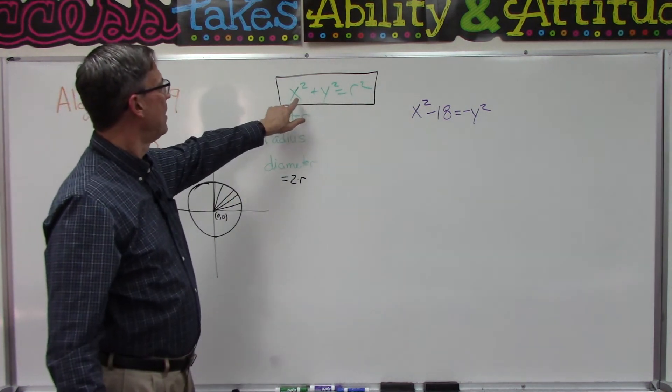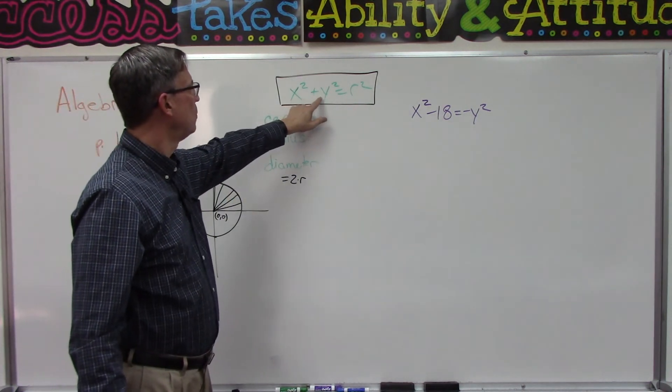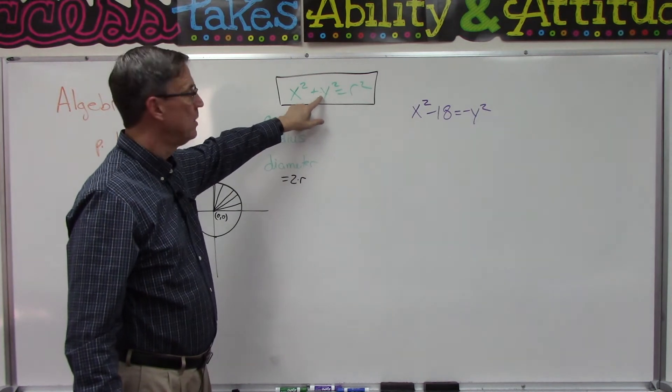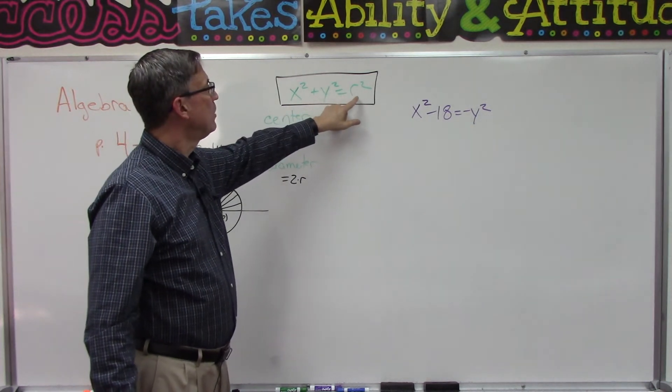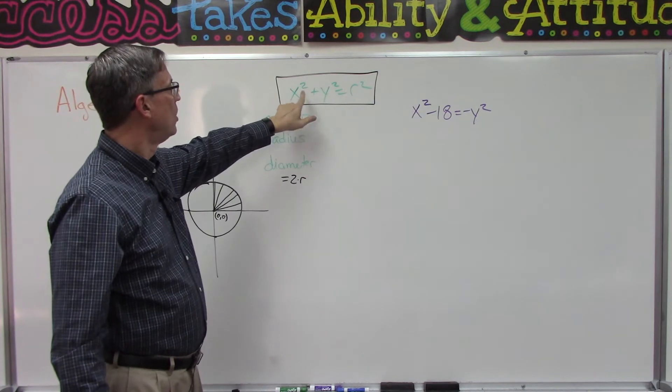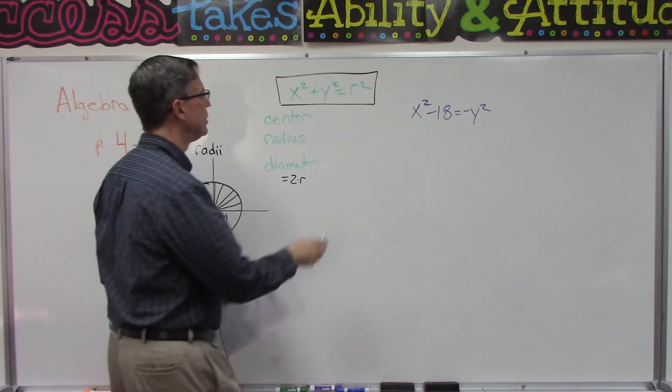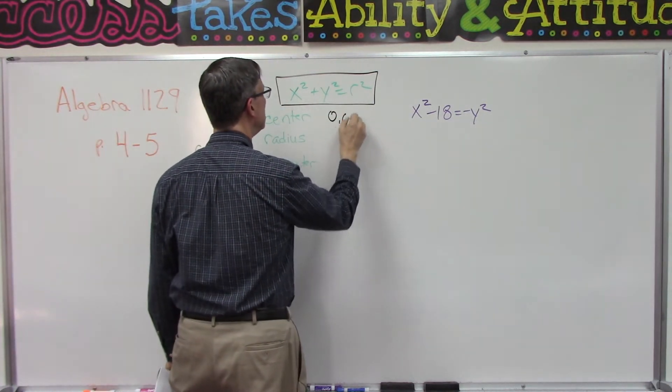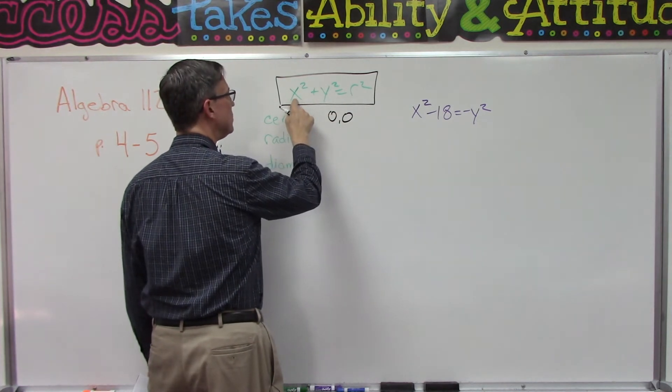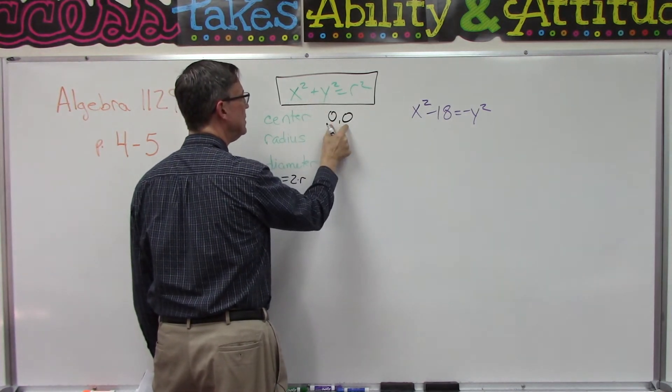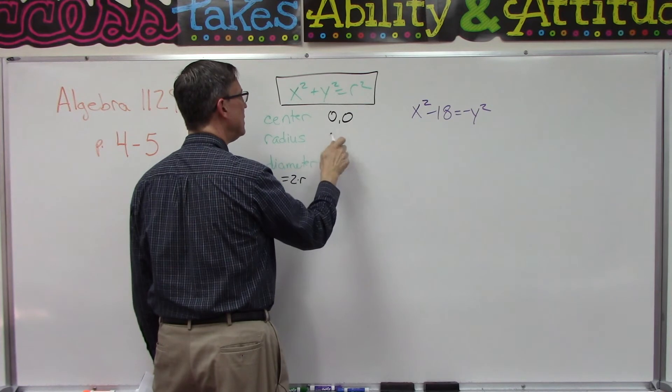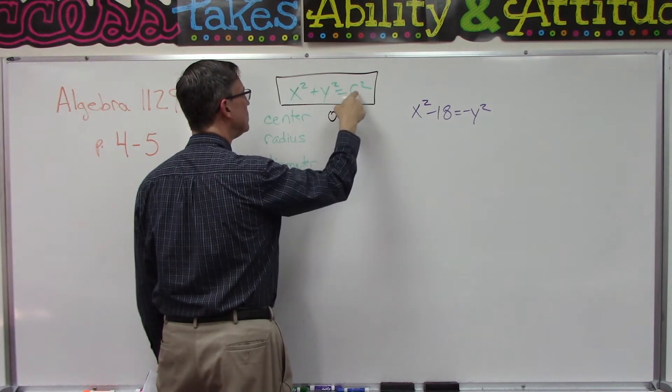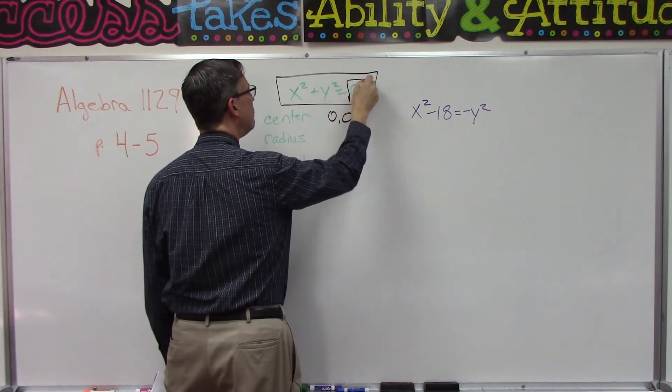Now here's the very simple formula: if we have it in the form x squared plus y squared, and then it equals some number, this is the formula of a circle where the center is always zero zero. If it's just x squared and y squared, the center is zero.